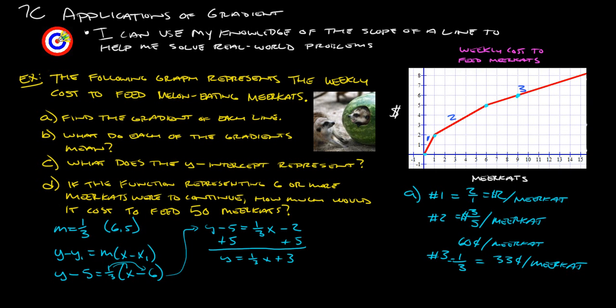Now they're asking us, how much would it cost to feed 50 meerkats? Right? So that 50 is, again, it even tells us right here on the graph that the number of meerkats is the x value. Right? That's what we're going to plug into our equation. So we'll plug that 50 in for our x. Right? So let's try that out. Let's do y. Let's change color here. So let's go y equals one-third of 50 plus 3.